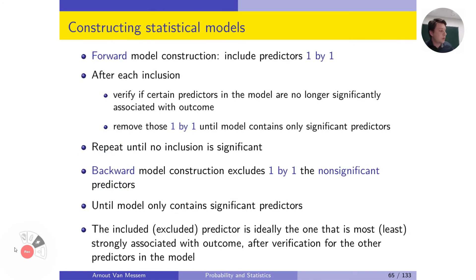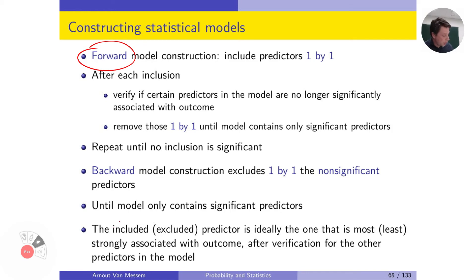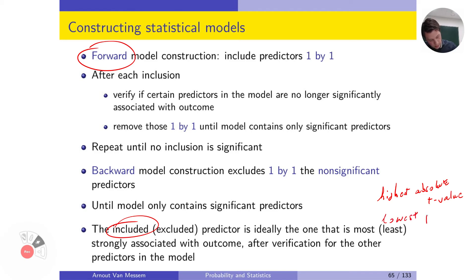We will be using forward model construction because it is the easiest and most logical way. It includes predictors one by one, starting from the empty model. It looks at all available predictors, constructs a simple linear regression with each, and selects the model with the most significant predictor — that is, the one with the highest absolute t-value or the lowest p-value.